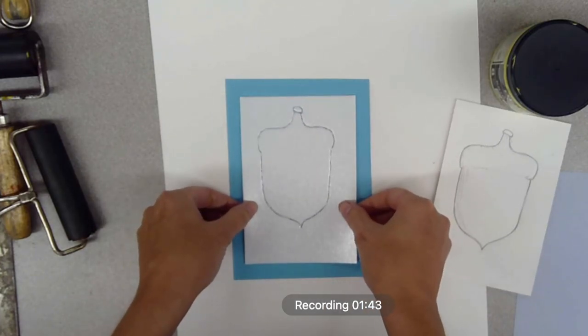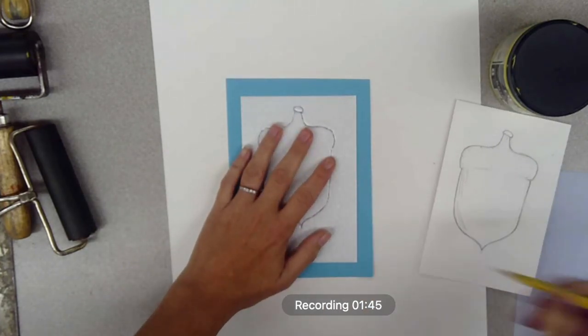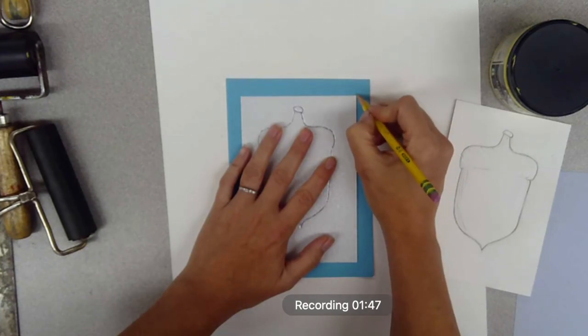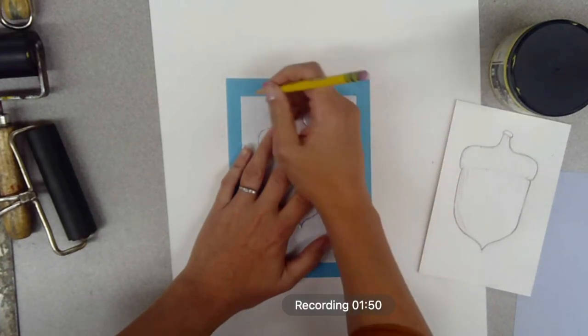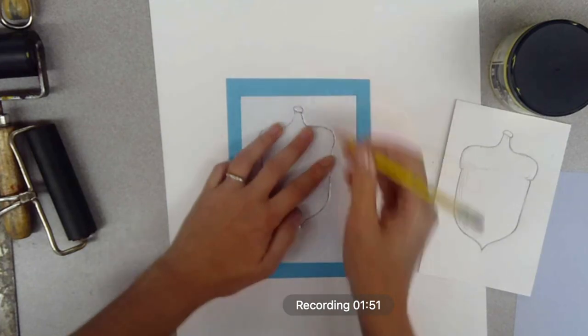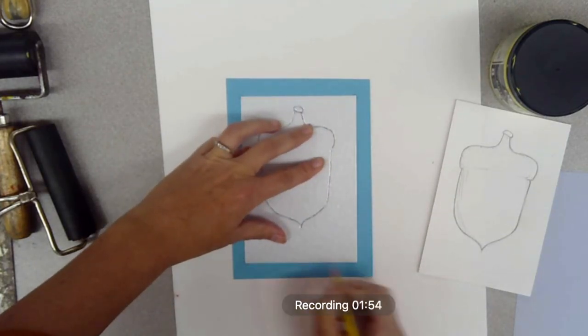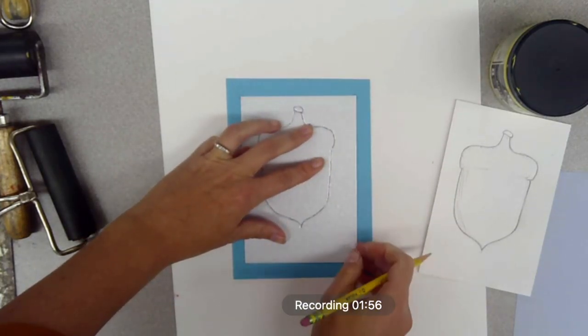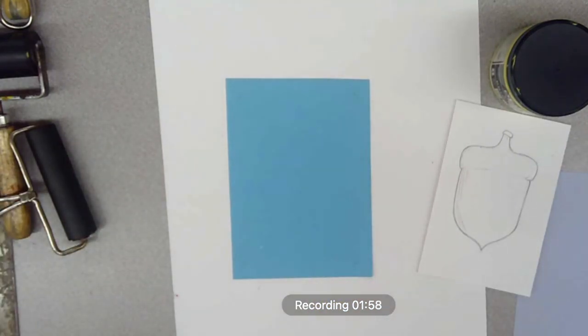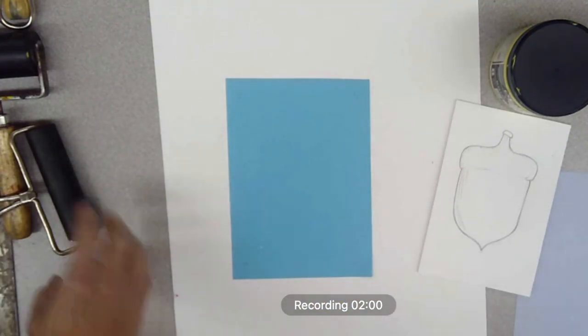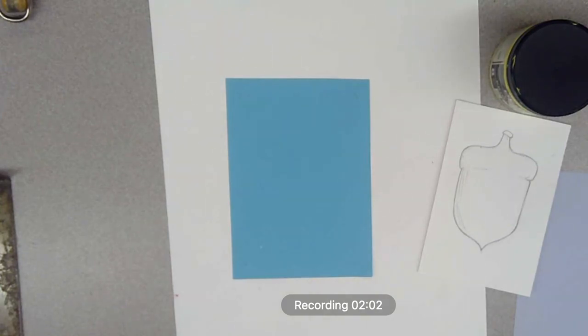Next, I'm taking my styrofoam and putting it on a piece of construction paper, and I'm going to draw little lines on the corner of the styrofoam. A horizontal or vertical on every corner. That way I know where I need to print each time, because I'm doing multiple prints on the same piece of paper.